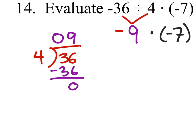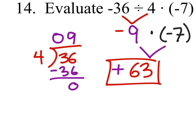Which now we're multiplying two negatives. Two negatives gives us a positive answer. And 9 times 7 is 63. And that right there is our final answer.